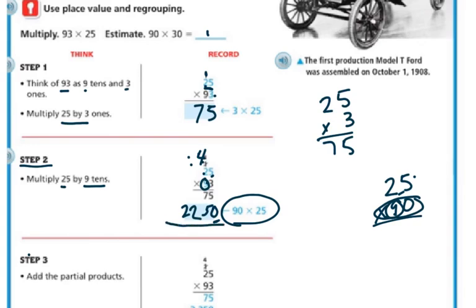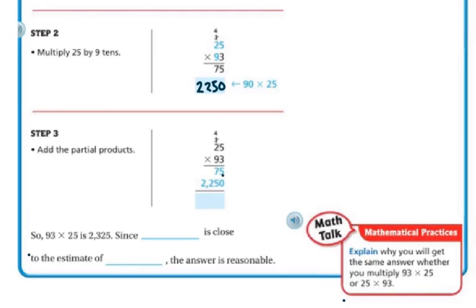Right now, I'm going to add them. So 5 plus 0 is 5. This is adding because I'm adding my partial products. 5 plus 0 is 5. 7 plus 5 is 12. Regroup my 1. 1 plus 2 is 3. And then 2 plus nothing is 2. So the answer is going to be 2,325. And that's close to our estimate that we had, which was 2,700. So we know the answer is reasonable.